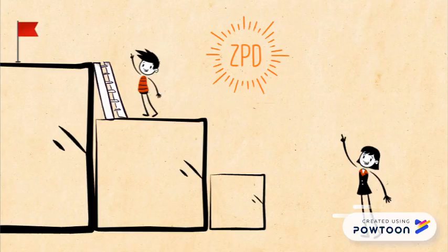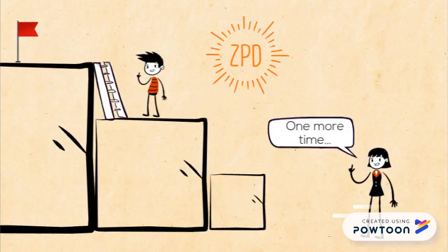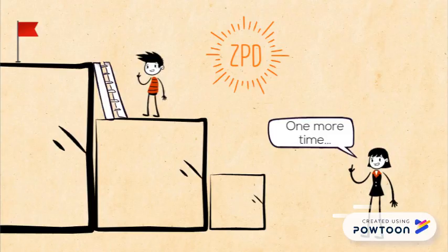This continues until Charlie finally reaches his ultimate goal and no longer needs anyone's help. And that is the Zone of Proximal Development.